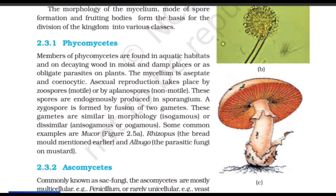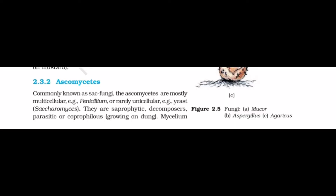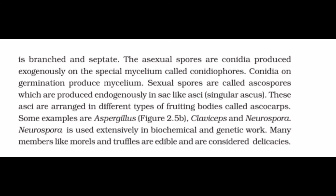Class two of fungi is Ascomycetes, commonly known as sac fungi. Ascomycetes are mostly multicellular, e.g. Penicillium, or rarely unicellular, e.g. Saccharomyces. They are saprophytic, decomposers, parasitic, or coprophilous (growing on dung). The mycelium is branched and septate.